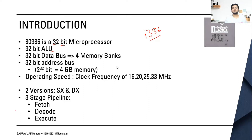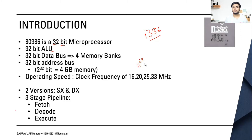Since everything is 32-bit, when calculating the physical memory of this microprocessor, we get 2 raised to the power 32. Since 2 raised to the power 30 equals 1 GB, and 2 raised to the power 2 is 4, it had 4 GB of physical memory.